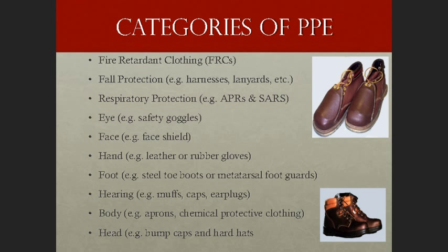Respiratory protection includes APRs and SARs — air purifying respirators and supplied air respirators — which are the two subcategories. We also have eye protection like safety goggles, face protection such as a face shield, hand protection like leather, work, or cotton gloves, foot protection such as steel-toed boots or metatarsal foot guards, hearing protection like muffs and earplugs, body protection like chemical protective clothing and aprons, and head protection like a bump cap or hard hat.